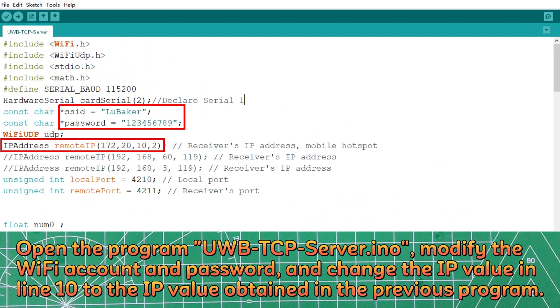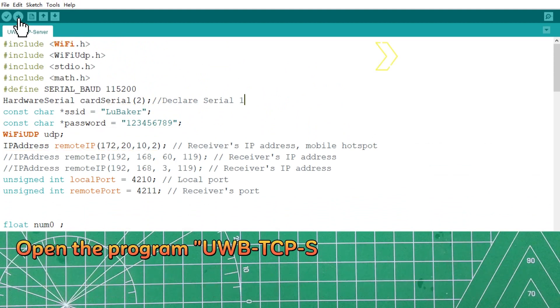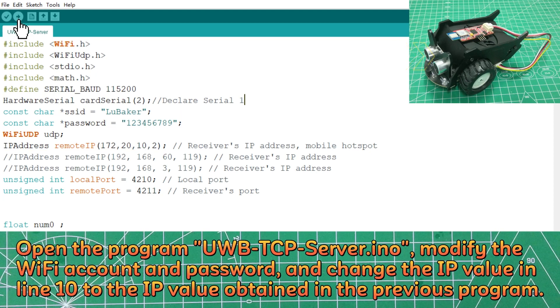Open the program uwbtcpserver.ino, modify the Wi-Fi account and password, and change the IP value in line 10 to the IP value obtained in the previous program.